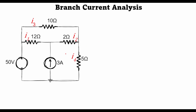The situation changes when we have a current generator in the network, because in this case we can no longer apply loops. If we applied loop current analysis, we would need loops in all three meshes. We would need to know the voltage drop across this current generator, and this is something that we don't know. So in this case loop current analysis doesn't work, but we still have another way of writing KVL equations using branch current analysis.